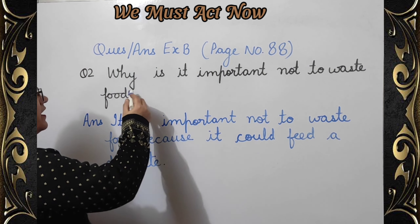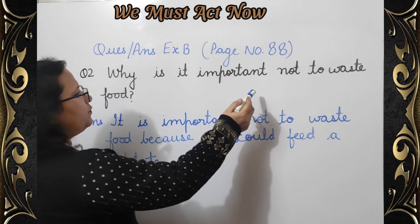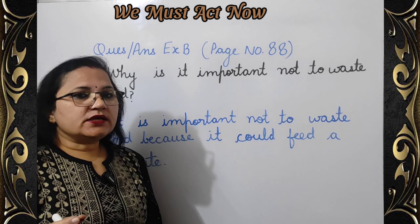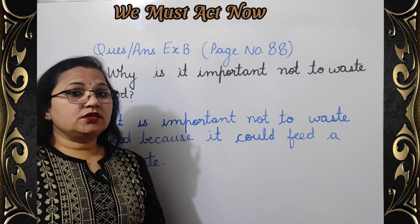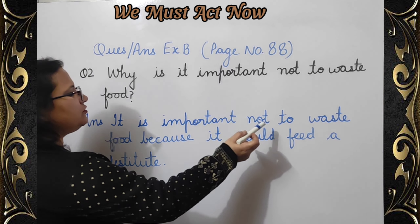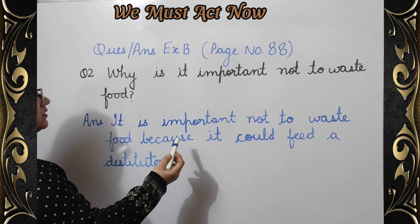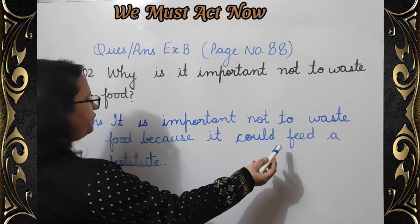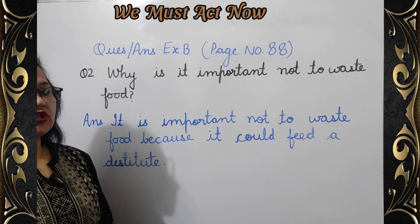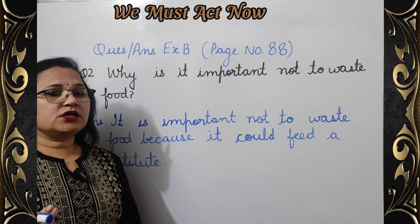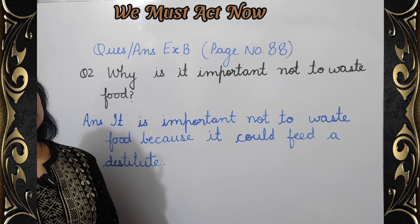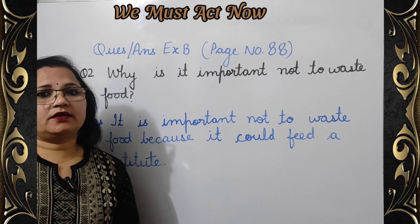Question number two: Why is it important not to waste food? Answer: It is important not to waste food because it could feed a destitute. ہمیں کھانا برباد نہیں کرنا چاہیے کیونکہ اس سے کسی بے سہارا کا، یعنی جس کے پاس کھانا نہیں ہے، اس کا پیٹ بھر سکتا ہے۔